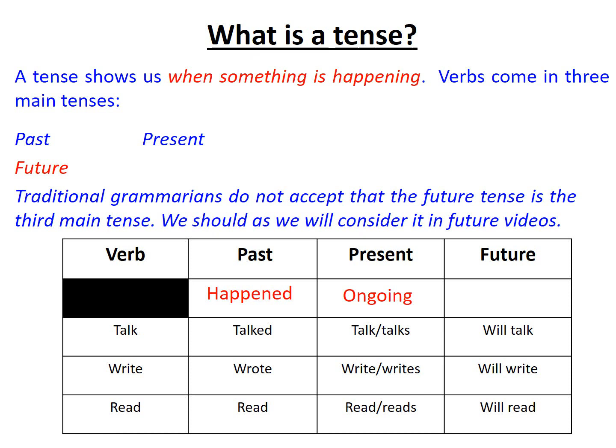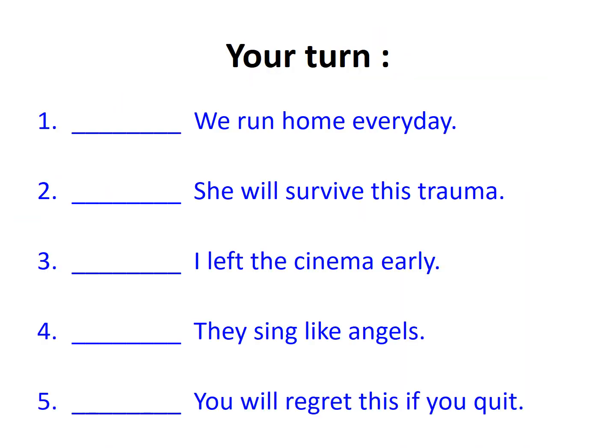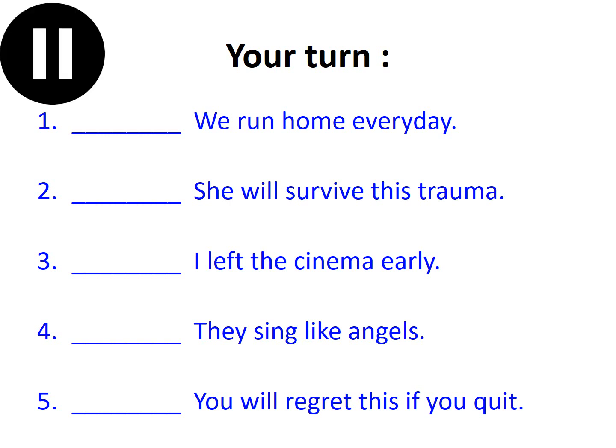In the future tense, we're considering that something will happen — it has not happened yet. You will talk, she will write, they will read. Now it's your turn. With each of the five sentences, I'd like you to identify the verb in the sentence and also what tense it is in. Hit pause if you need thinking time.